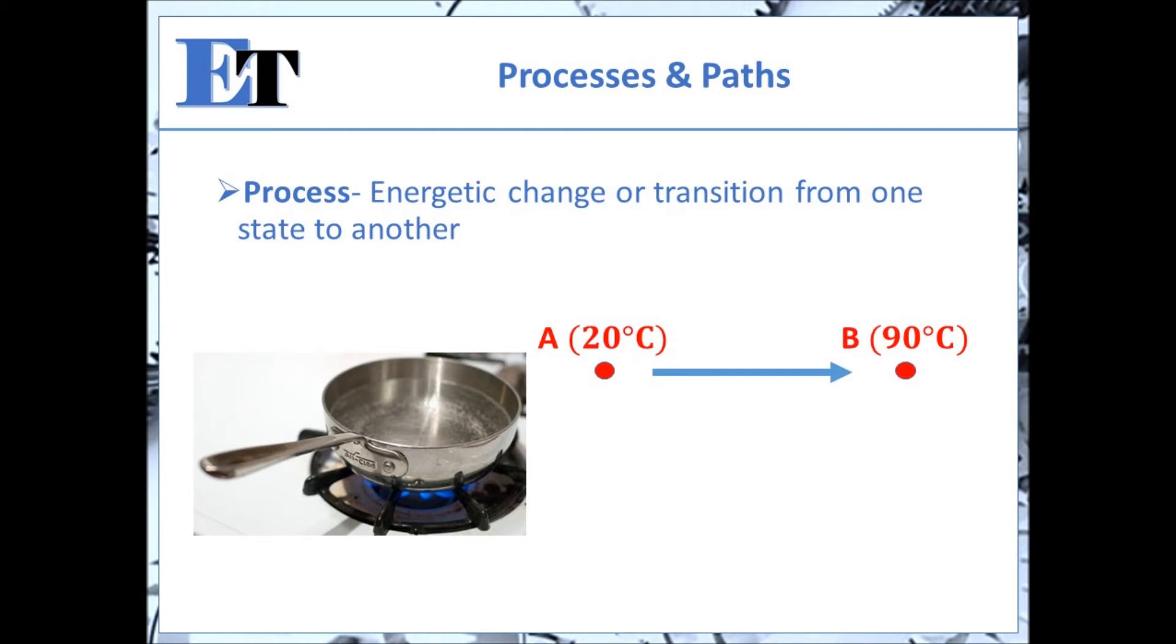The transition between state A and B is referred to as a process. The way in which your process occurs is referred to as the process path. For example, you could start with room temperature water and heat it up to 70 degrees Celsius first, then lower the temperature to 30 degrees, and finally raise it back to 90 degrees Celsius. The end result is still a process from state A to state B, but the way in which it is manifested differs by the process path.